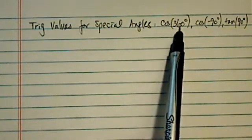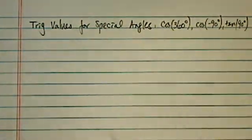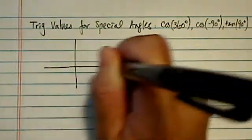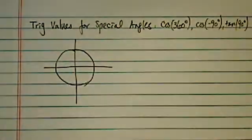We're interested in finding cosine 360, cosine minus 90, and tangent 90. In this clip, I'm hoping to give you a shortcut, something you can take onto your exam and never be troubled with those questions again.